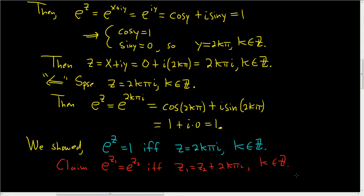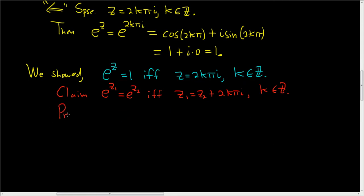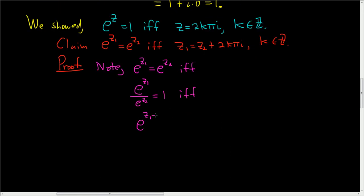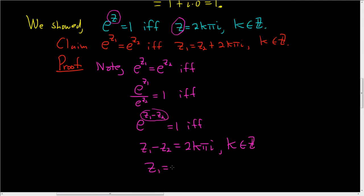This should follow immediately — we're going to do it all in one move. Note: e to the z1 equals e to the z2 if and only if — dividing both sides by e to the z2 — e to the z1 over e to the z2 equals 1, if and only if e to the z1 minus z2 equals 1, if and only if — applying our lemma to z1 minus z2 — z1 minus z2 equals 2k pi i, where k is in the integers. Then adding z2 to both sides: z1 equals z2 plus 2k pi i, where k is in the integers.